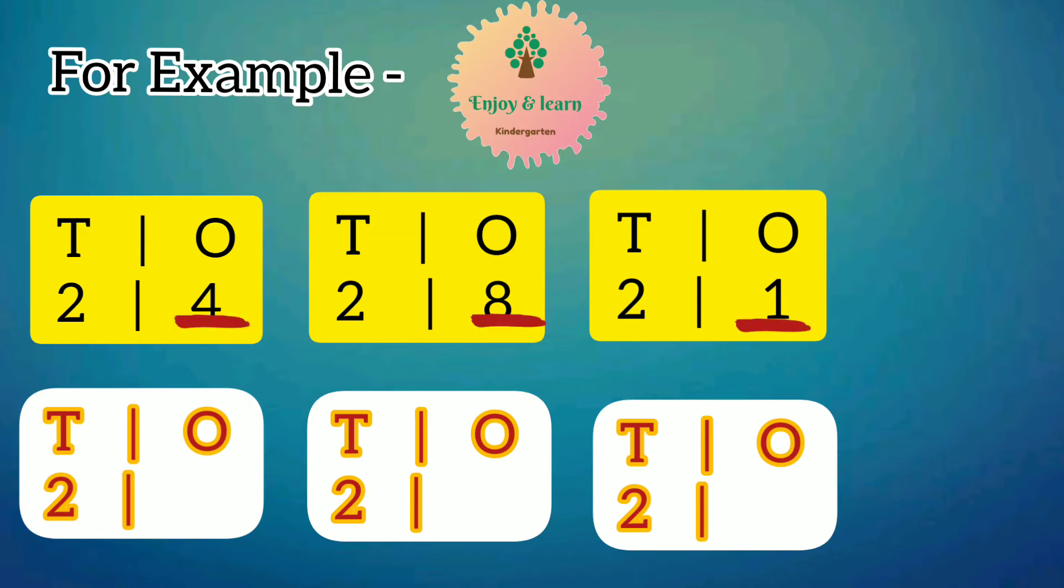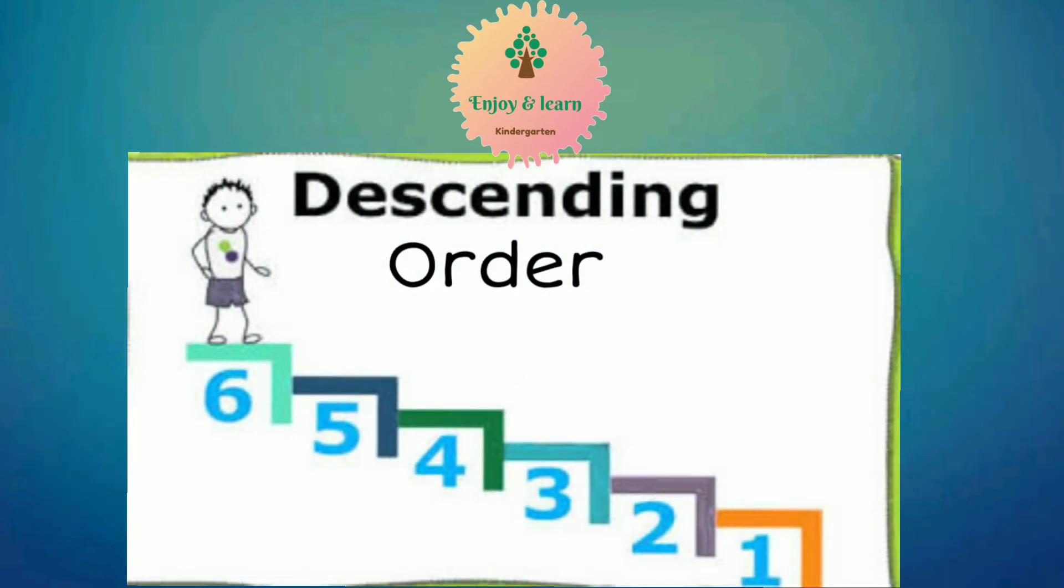For this we will see the number chart on the right side. From the given numbers, whichever comes last, that means greatest number, will be kept at first. Because we are doing descending order. In descending we arrange numbers from greatest to smallest.